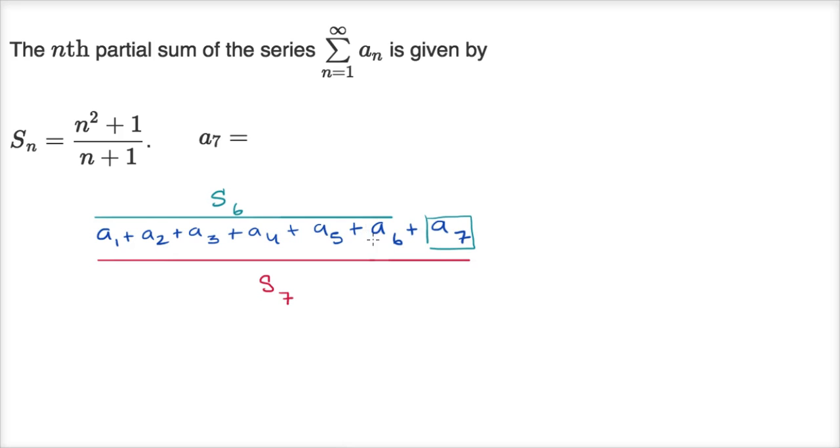So another way of saying what I just said is that a sub seven is going to be the sum of the first seven terms minus the sum of the first six terms. And if you were doing this problem on your own, you wouldn't have to write it out this way. I just wrote it out this way, hopefully making this statement a little bit more intuitive.